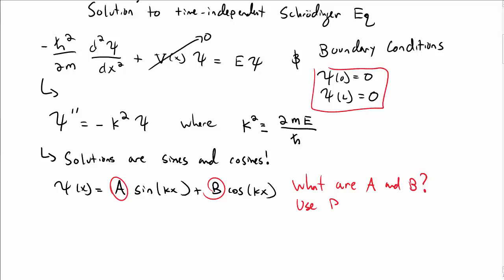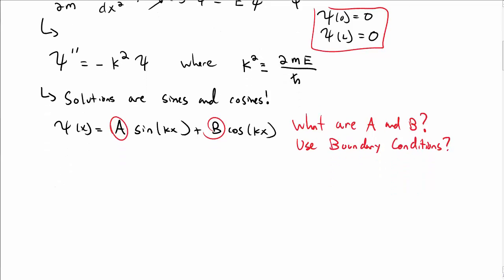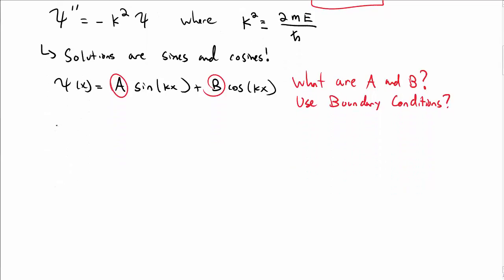The first thing we can do is use our boundary conditions at 0 and L to figure out these unknown constants. First, let's look at ψ(0) = 0. Plugging 0 into our expression, sin(0) is 0, and then I have plus B cos(0), which is B. So B has to be 0 to satisfy that boundary condition.